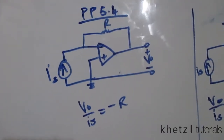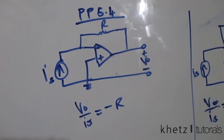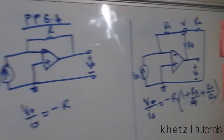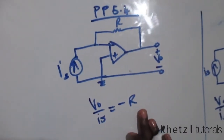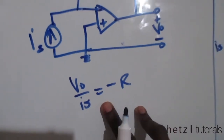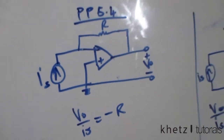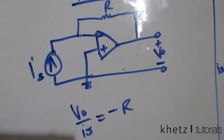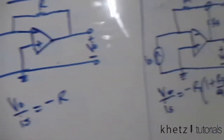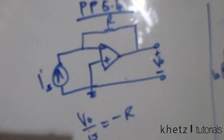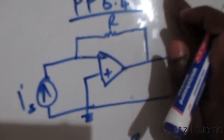Welcome to CAT Tutorials. In this video I'll be covering practice problem 5.4. This problem is split into two sections. I will start with the one to my left. We are asked to prove that vo divided by is equals negative R, so this is a proof-type question where we just apply what we know and see if we get what they're asking us to find.